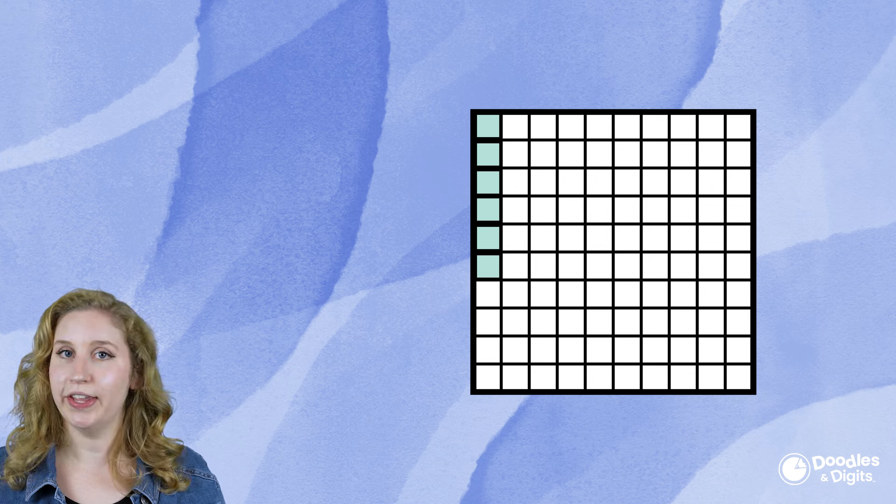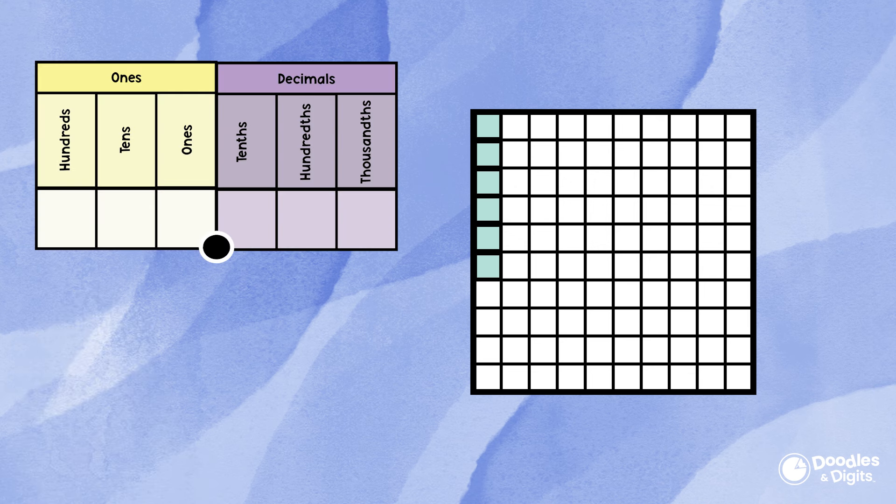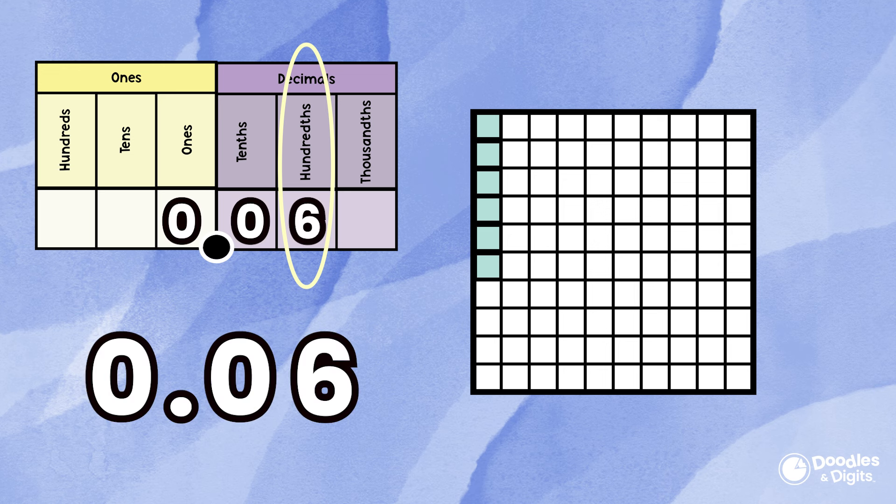Let's try looking at another model. We're going to use the place value chart again. This whole is broken into hundredths, so the number we're going to put in the hundredths place. How many hundredths do we have? That's right, we have six hundredths. Since we have six hundredths and we have zero tenths, we're going to put a zero in the tenths place, so our answer is 0.06.